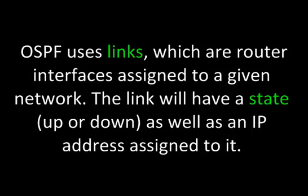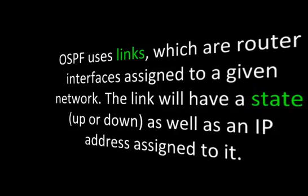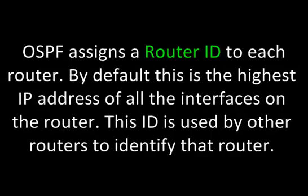OSPF uses links, which are router interfaces assigned to a given network. The link will have a state, up or down, as well as an IP address assigned to it. OSPF assigns a router ID to each router. By default, this is the highest IP address of all the interfaces on the router, and this ID is used by other routers to identify that router.